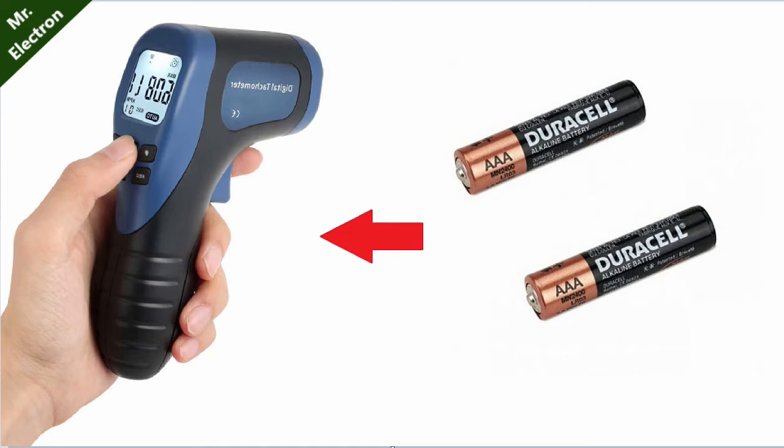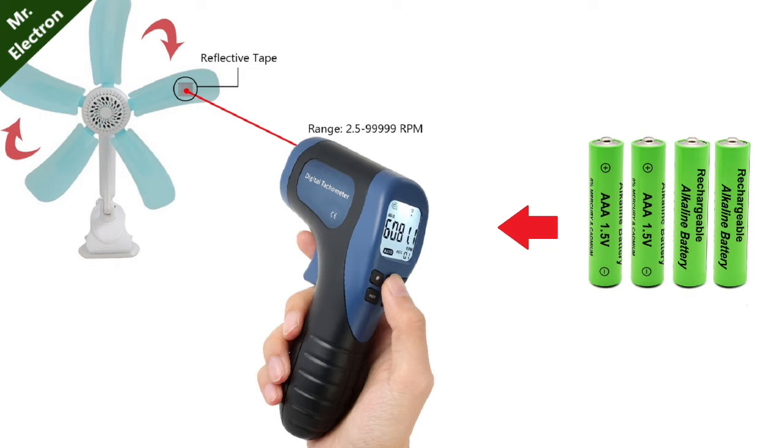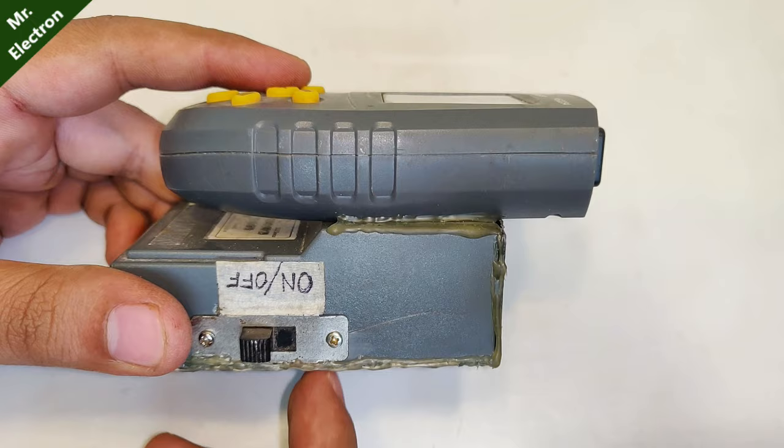Now, the tachometers that are available in the market usually come with two AAA batteries which drain really fast because of the laser pointer installed in the tachometer.